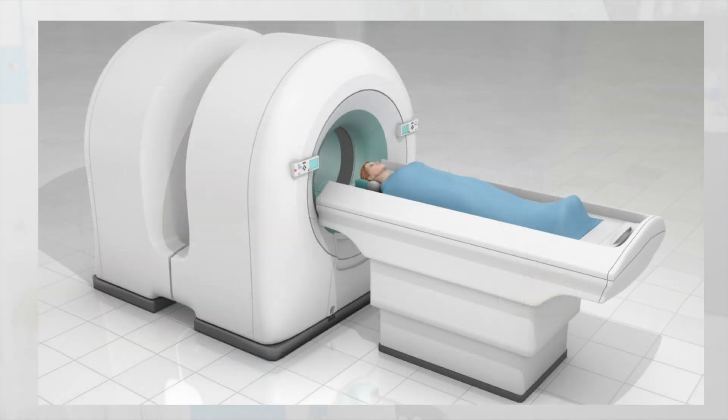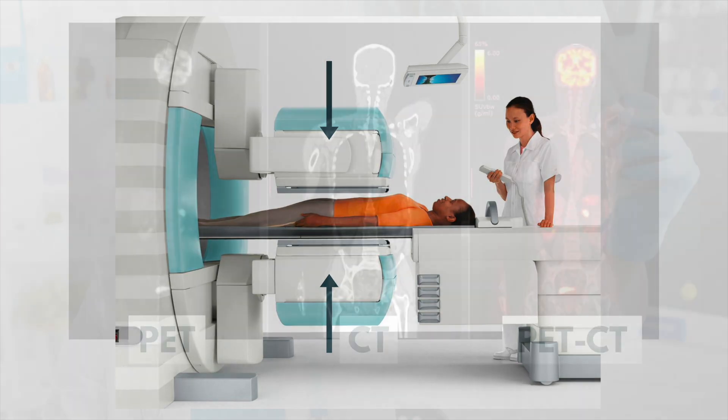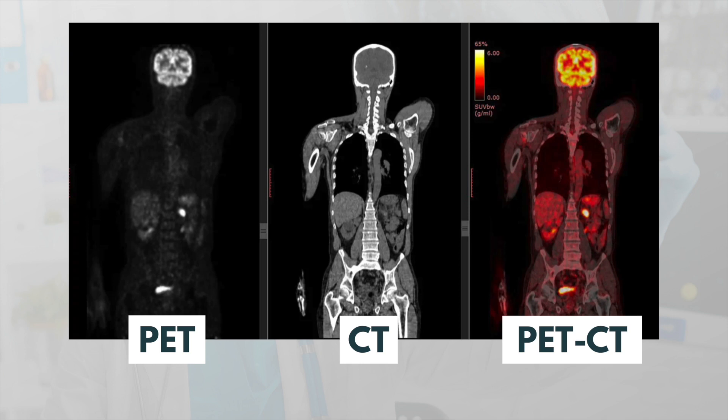A typical PET scanner incorporates hundreds of detectors in the form of rings around the patient. SPECT scans, on the other hand, typically have two large rectangular detectors that rotate around the patient. SPECT and PET scans are most often combined with CT scans to provide both anatomical and metabolic information.